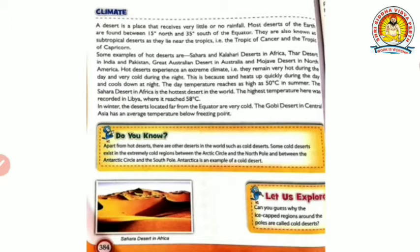Compared to normal plains or regions like Assam and Meghalaya, desert areas receive very little rainfall. They are also known as subtropical deserts as they lie near the tropics - near the Tropic of Cancer and Tropic of Capricorn. Some examples of hot deserts are the Sahara and Kalahari deserts in Africa, the Thar desert in India and Pakistan, the Great Australian Desert in Australia, and the Mojave desert in North America.